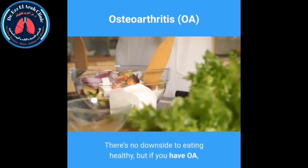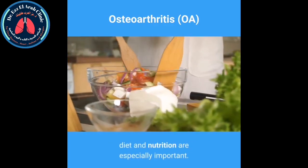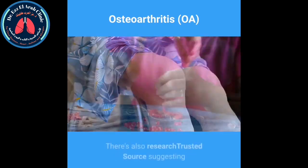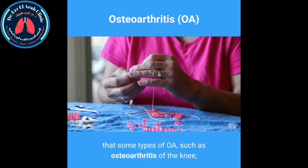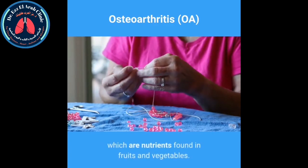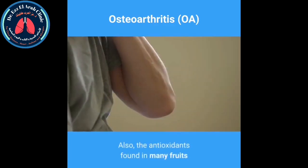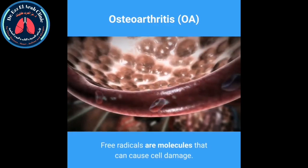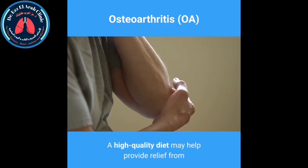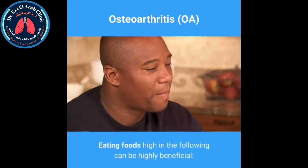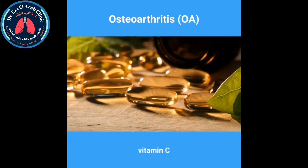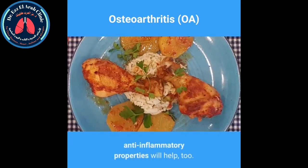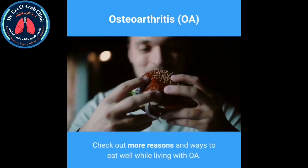Osteoarthritis diet. If you have OA, diet and nutrition are especially important. First, keep your weight in a normal range to reduce unnecessary pressure on your joints. Research suggests that some types of OA, such as osteoarthritis of the knee, respond positively to a diet high in flavonoids — nutrients found in fruits and vegetables. Antioxidants found in many fruits and vegetables may also help combat free radicals produced by inflammation. Eating foods high in vitamin C, vitamin D, beta-carotene, and omega-3 fatty acids can be highly beneficial in reducing inflammation and swelling.